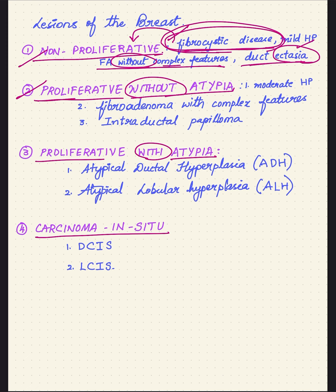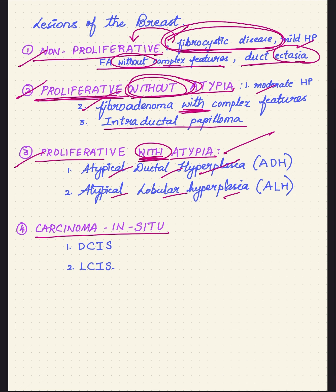Proliferative lesions without atypia — without atypia means without bad-looking cells — include moderate hyperplasia, fibroadenoma with complex features like calcification, and intraductal papilloma. Proliferative lesions with atypia include atypical ductal hyperplasia and atypical lobular hyperplasia. And lastly, carcinoma in situ: ductal carcinoma in situ and lobular carcinoma in situ.